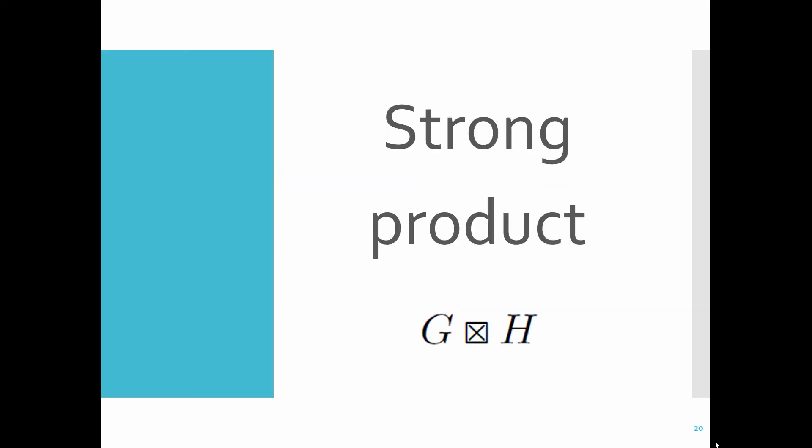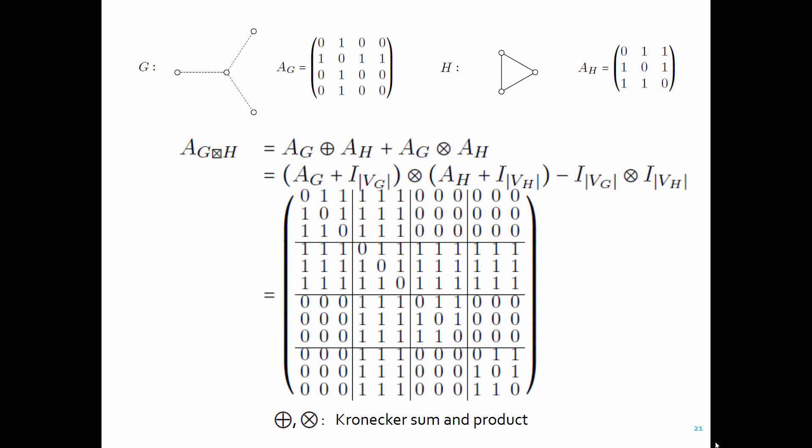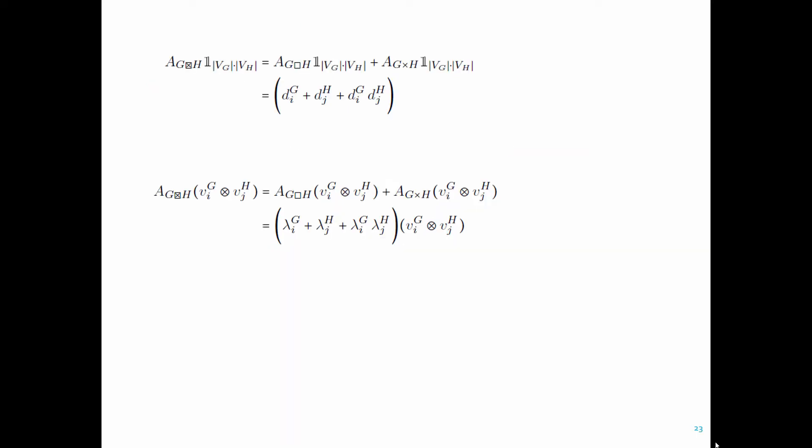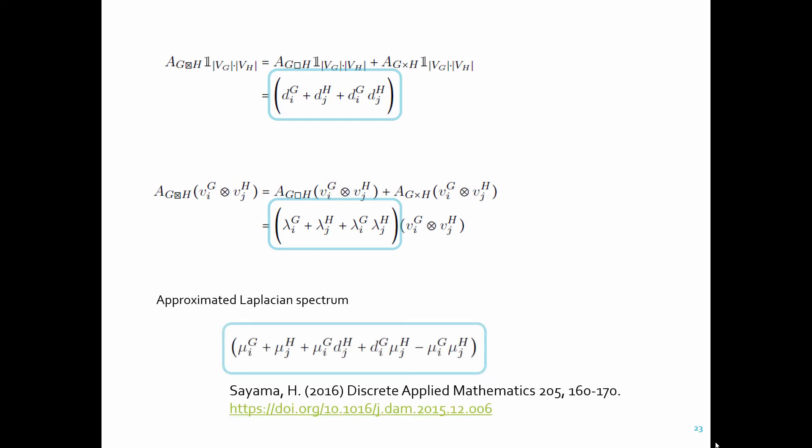The third graph product operation is the strong product. This is really just the sum of the previous two, Cartesian and direct graph products. And just like the direct product, the degree sequence and the adjacency spectrum of the strong graph product are computable exactly, while its Laplacian spectrum can be estimated using heuristics.